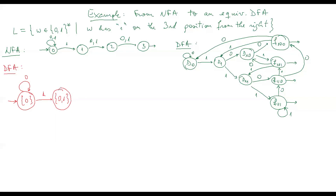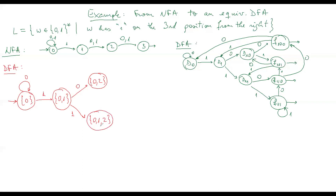From state {0} with '0', we go to state 0 in the NFA, so we stay in {0}. With '1', we can go to either state 0 or state 1, so the new state is {0,1}. From state {0,1} with '0': state 0 goes to 0, and state 1 goes to 2, giving us state {0,2}. With '1': state 0 goes to {0,1} and state 1 goes to 2, giving us state {0,1,2}.